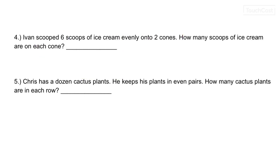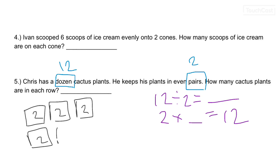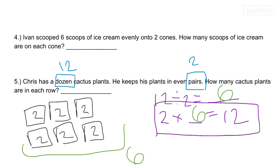Last one. Chris has a dozen cactus plants. He keeps his plants in even pairs. How many cactus plants are in each row? Wait a minute. I don't see any numbers in this problem. That's because words can mean numbers. Do you know how much a dozen is? 12. Remember we talked about the word pairs? 2. So sometimes words mean numbers. So 12 divided by 2 equals blank. Or 2 times blank equals 12. Let's draw our picture. Here are pairs. [Counting by 2s to 12]. How many boxes did I draw? 6. So hopefully you're seeing which way is faster. I would love if you wanted to practice using a picture. But really we want to be able to do the flip-flop to get the correct answer.